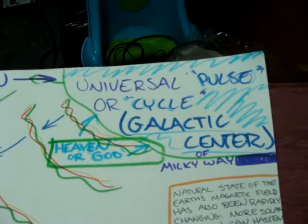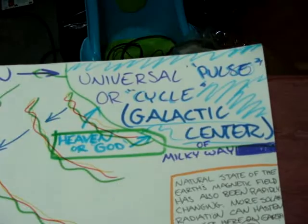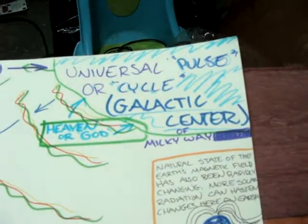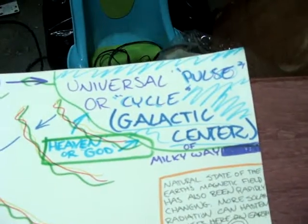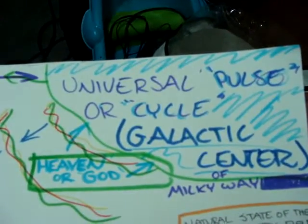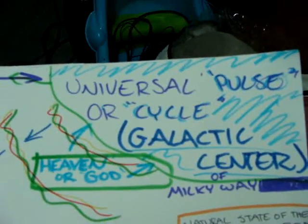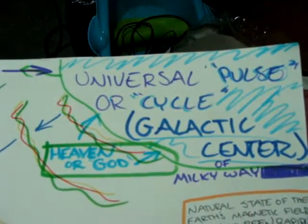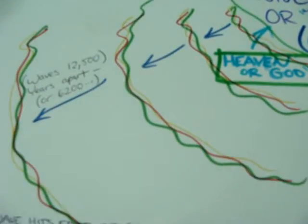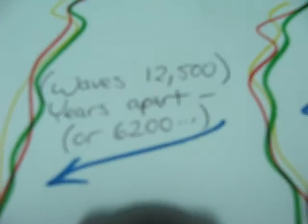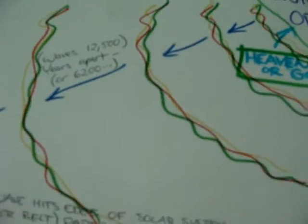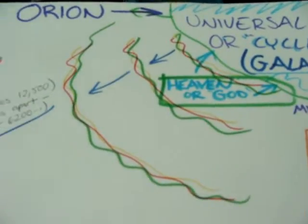The theory is that there's a pulse that originates from the galactic center and reaches the Earth in increments — whether it be 12,500 years or 6,200 years. There are a few different theories, but this pulse originates from the galactic center. These little wavy lines are the pulse, about 12,500 years apart, just for the sake of argument.